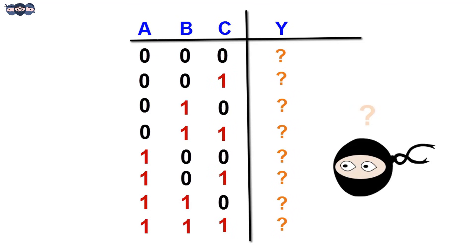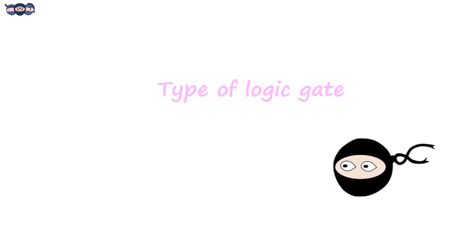But how do we decide the output for each input? The type of logic gate decides the output. Let's study the basic logic gate.